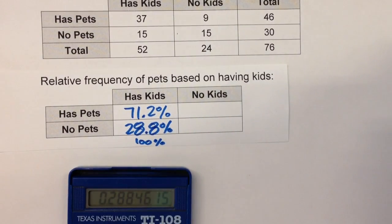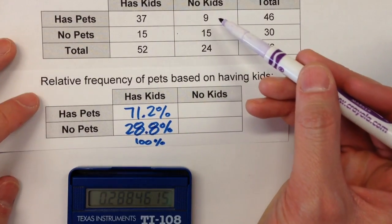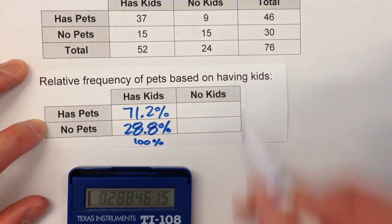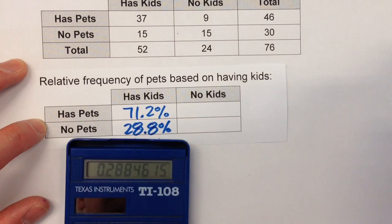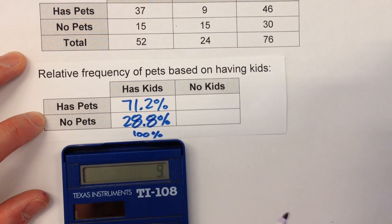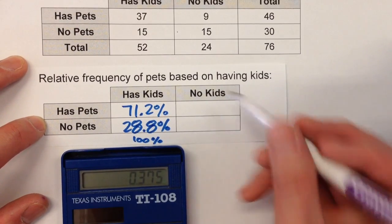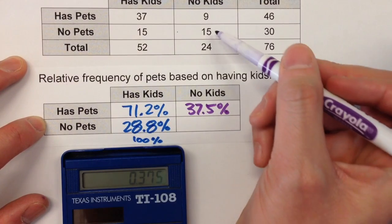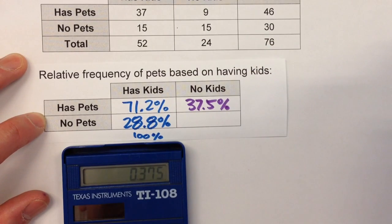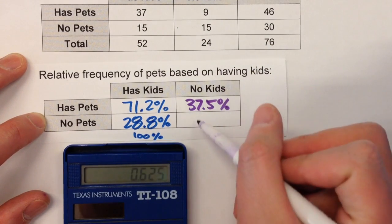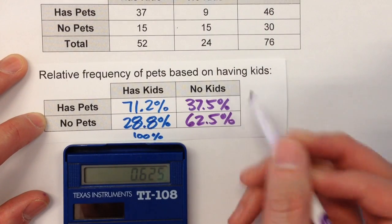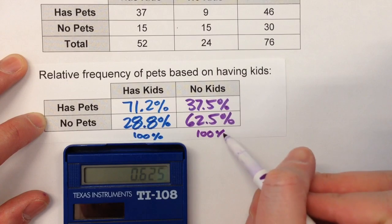Now let's do the other column — no kids. 9 have no kids with pets out of 24 total people who have no kids. So it's going to be 9 divided by 24, which is about 37.5%. And then 15 out of 24 have no pets, so that's 62.5%. Again, this column should add up to 100% — and look, it does.